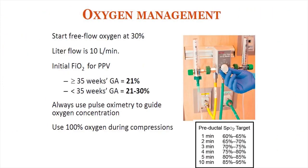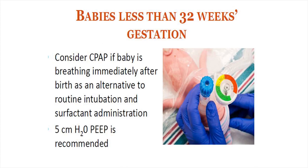For oxygen management: start free-flow oxygen at 30% at a flow of 10 liters per minute. For initial FiO2 during PPV, if the baby is more than 35 weeks gestational age, start with FiO2 21%. If less than 35 weeks, give FiO2 between 21–30%. Always use a pulse oximeter to guide oxygen concentration, and use 100% oxygen when chest compression is required. The preductal SpO2 targets are based on duration after birth. For babies less than 32 weeks, consider CPAP immediately after birth, especially if there is grunting with spontaneous respiration.